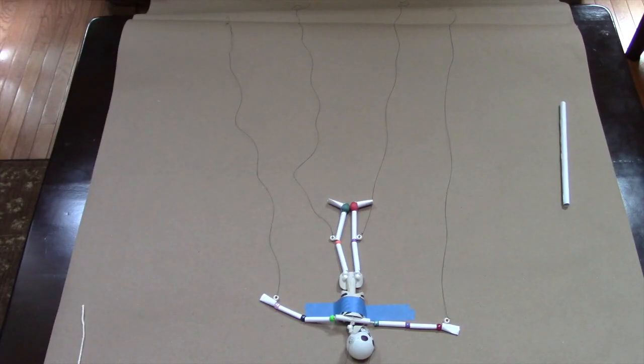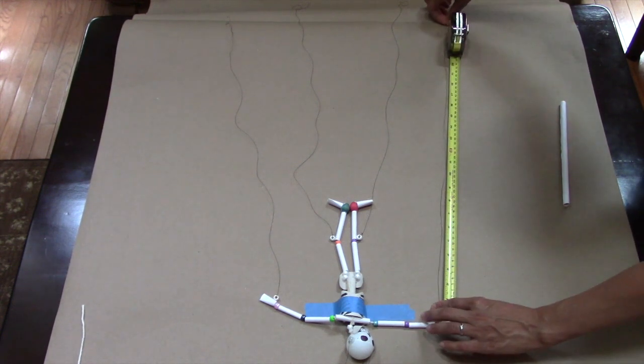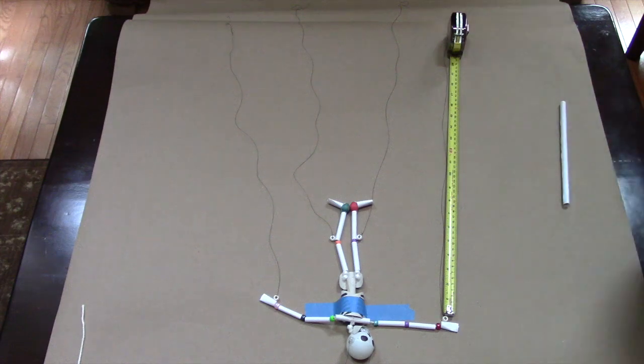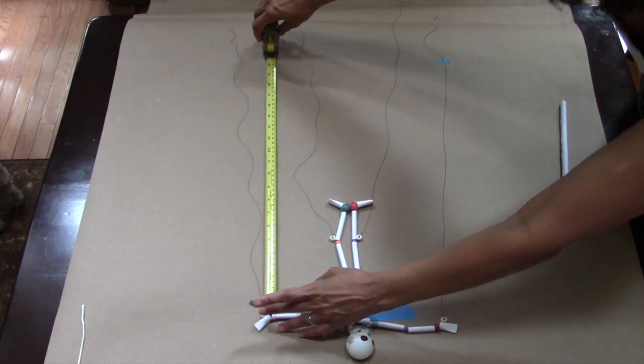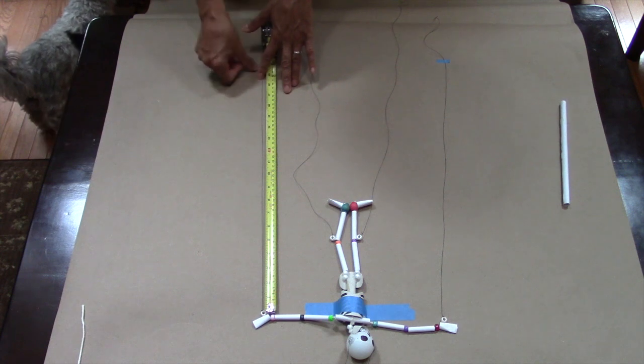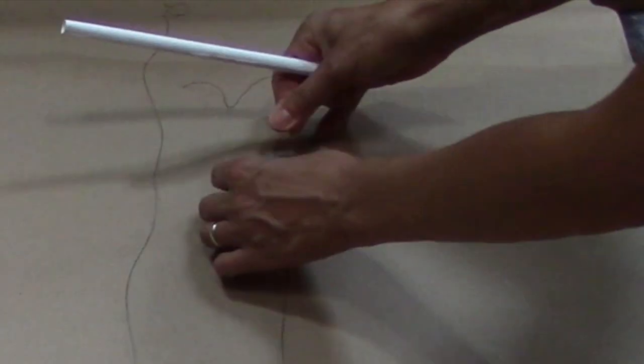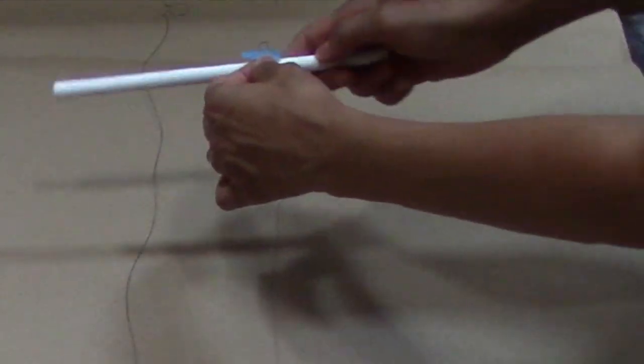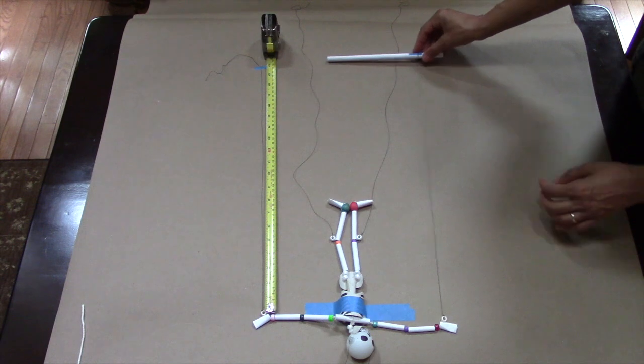Now you can attach the strings to the controls. Start with the arm strings. Measure from the tab along the string and place a sliver of tape on the string at the 20 inch mark. Do the same thing for the other arm. Then take one of the wrapped pencils and transfer the piece of tape with the string attached to the top edge. Do the same thing for the other side.